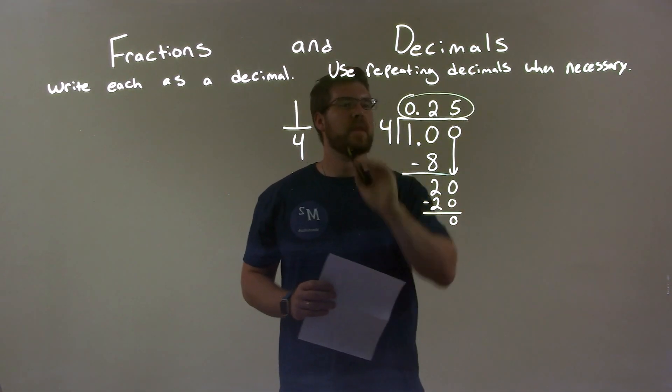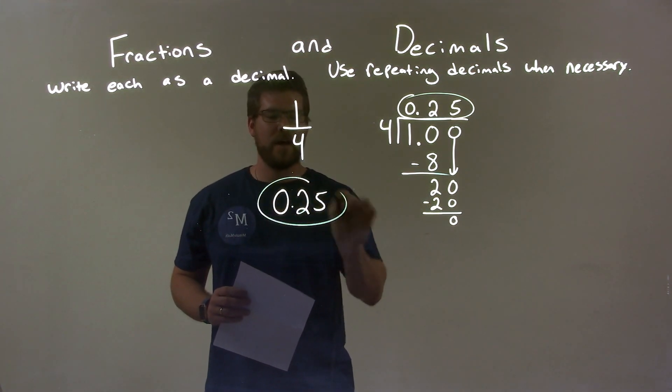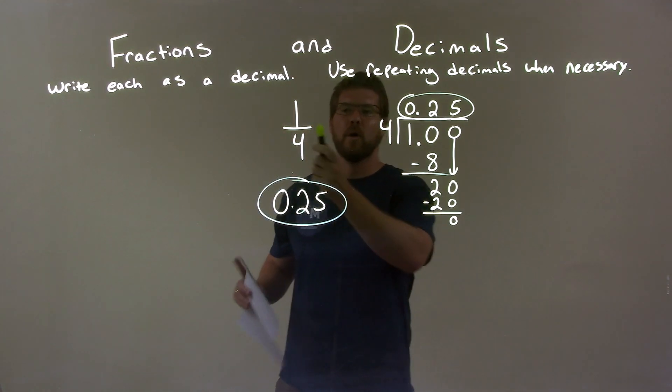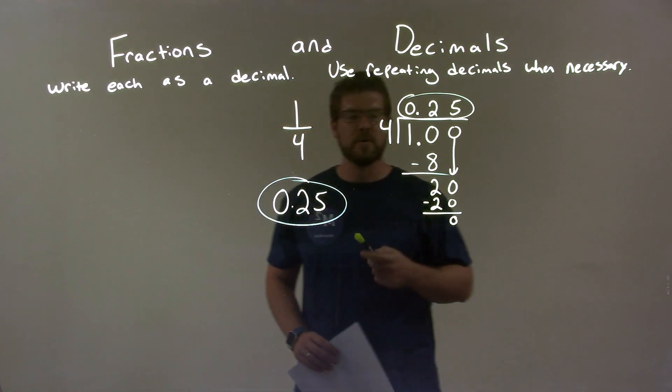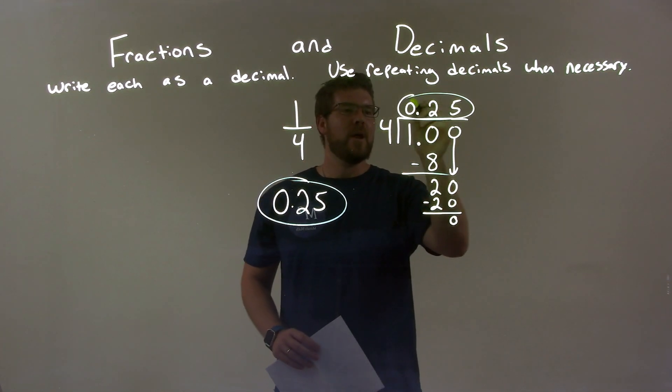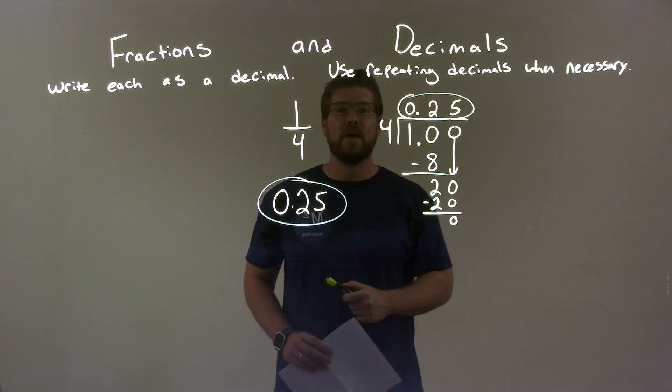and it's written up top, and that is zero point two five. That is our final answer. So quick recap: we wanted to take one-fourth and write it as a decimal. We did long division, four into one, broke it down, and we ended up with zero point two five, and that is our final answer as a decimal.